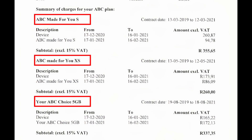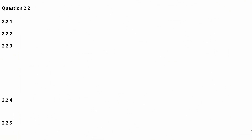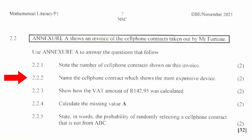Question 2.2.1: State the number of cell phone contracts shown on this invoice. From Annexure A, we see that the number of contracts shown on this invoice is 3.